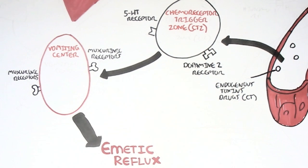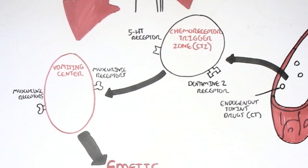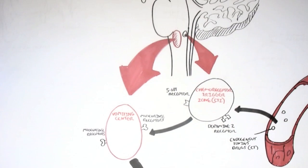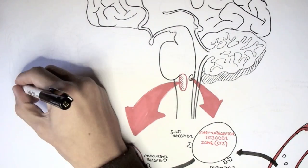So essentially the chemoreceptor trigger zone is what is stimulated by toxins, circulating toxins, and this will cause us to vomit. Afferent impulses that activate the vomiting center to cause emesis also can be due to activity of the vestibular nucleus, which mediates nausea and vomiting of motion sickness.